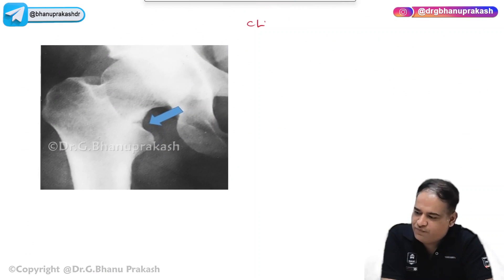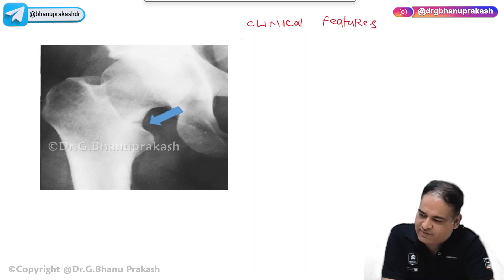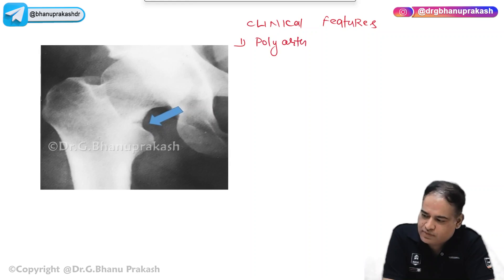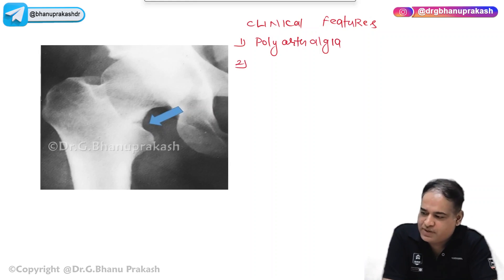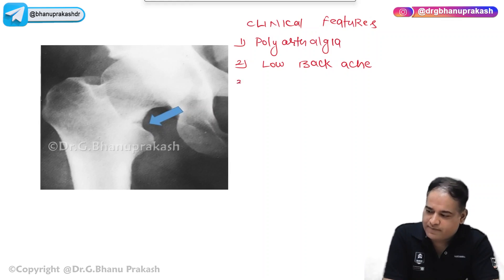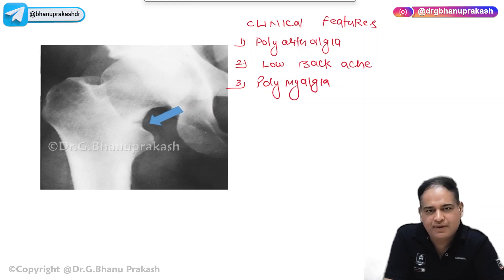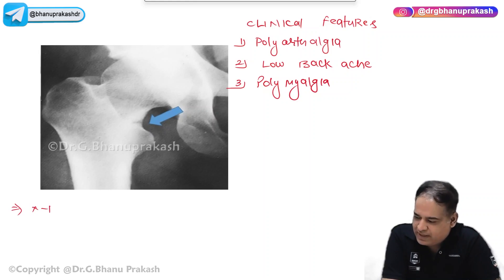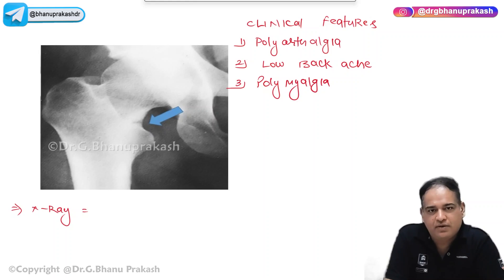The clinical features of osteomalacia include polyarthralgia — multiple joint pains — and low back ache, as the vertebral column is weak and unable to support the body's weight. Patients also present with polymyalgia. X-ray findings are also characteristic.